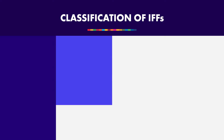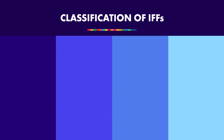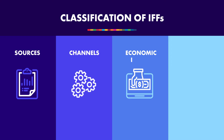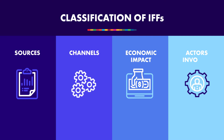Illicit financial flows can be classified from many angles, such as the sources of IFFs, the channels through which IFFs move, the economic impacts of IFFs, as well as the actors involved in IFF activity and their motives.